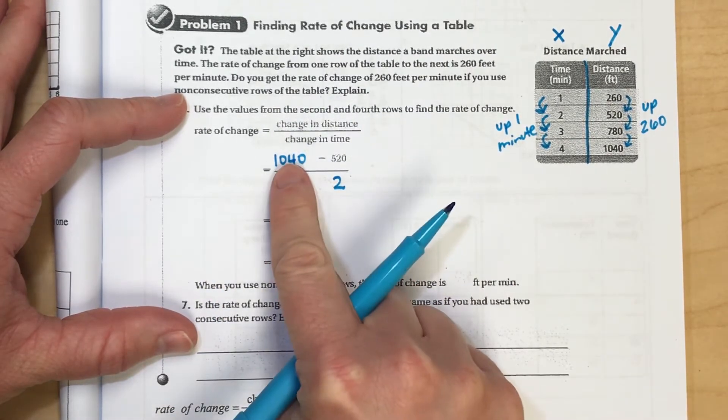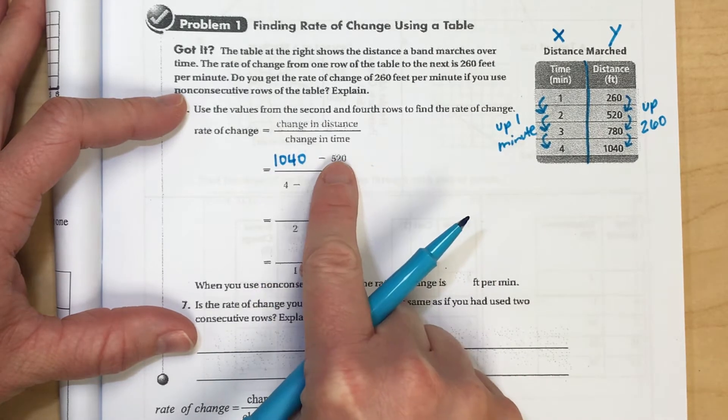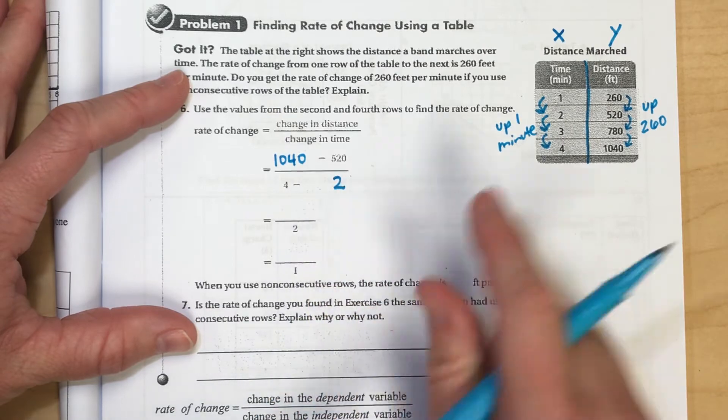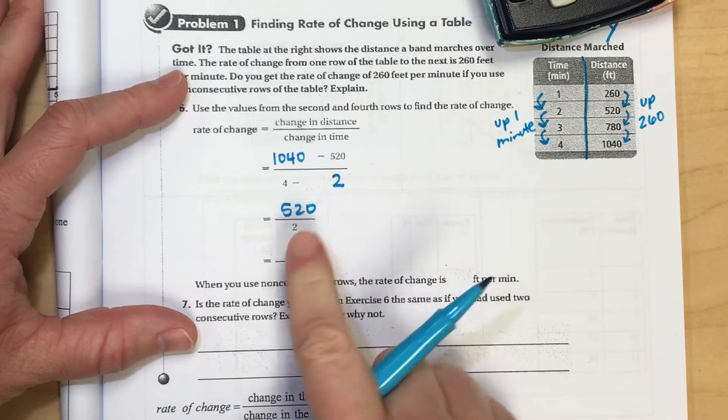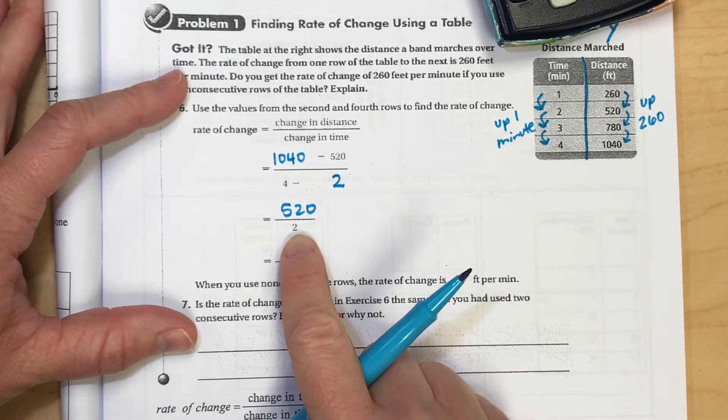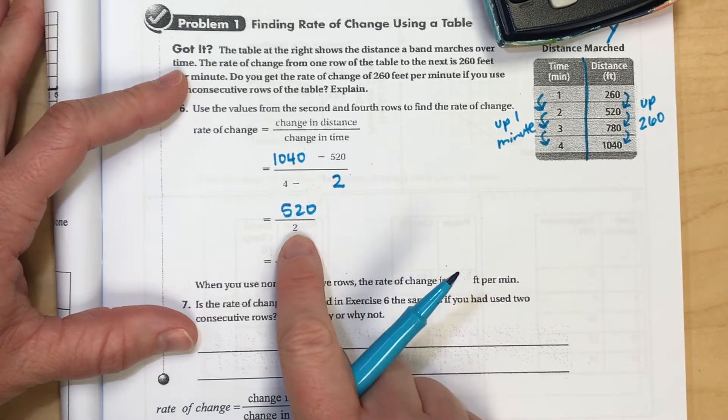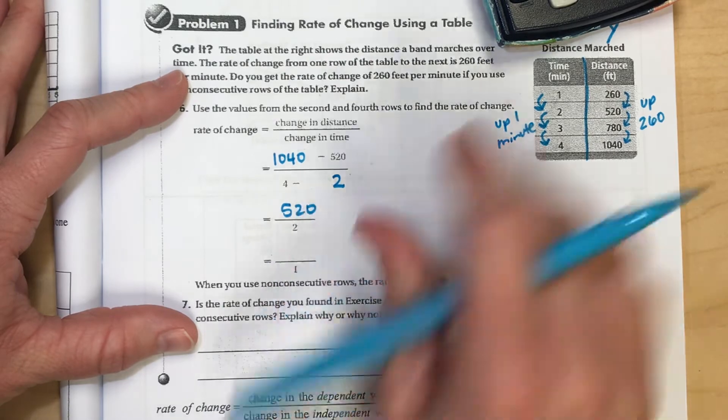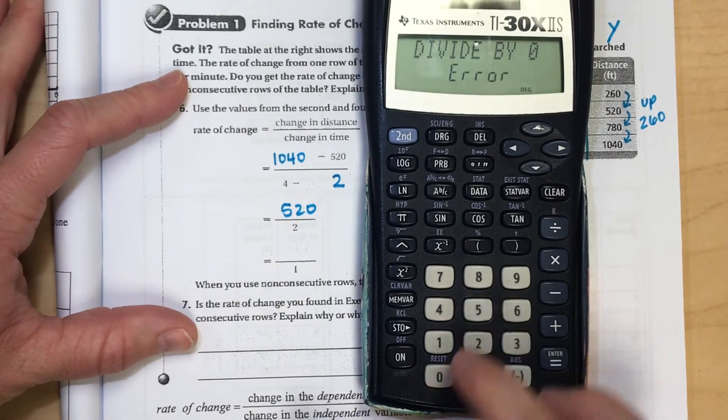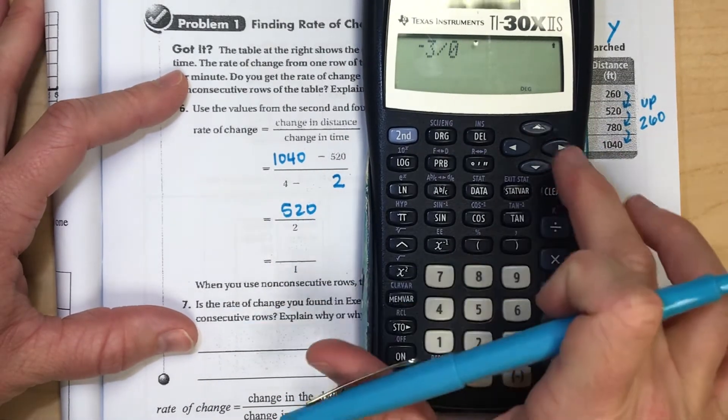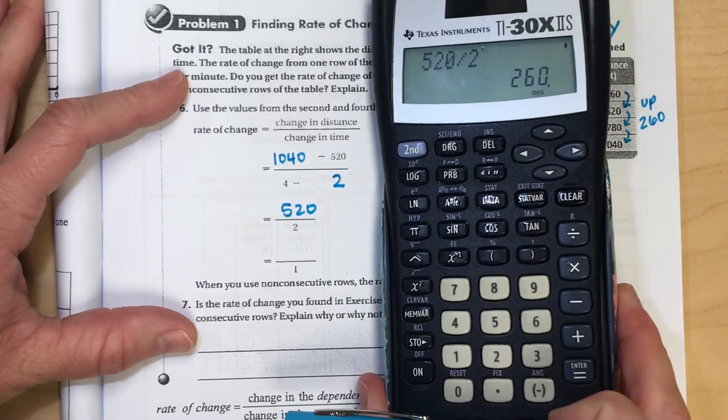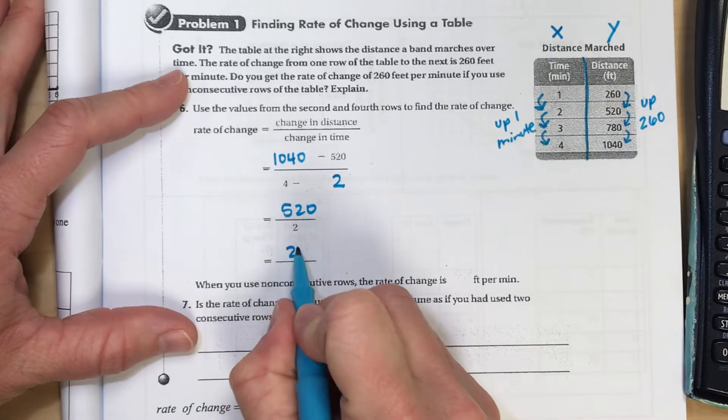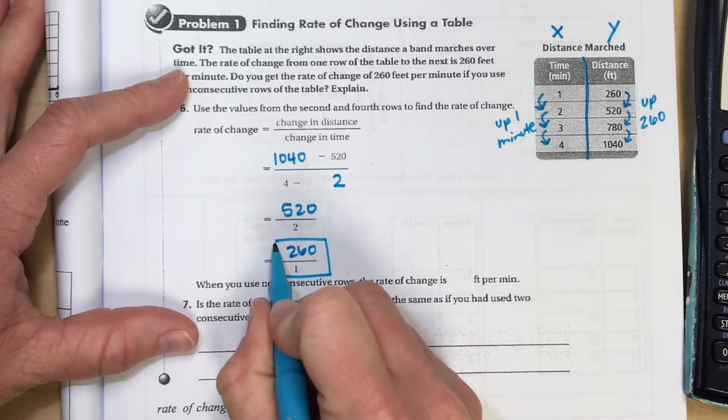So if we start subtracting on the numerator here, 1040 minus 520, you're going to see that that difference with your calculator is 520. And the x values went from four to two. And if we were to reduce that, 520 divided by two, you'll see that you get 260. So if we reduce 260 over one, but that's what we were kind of talking about over here.